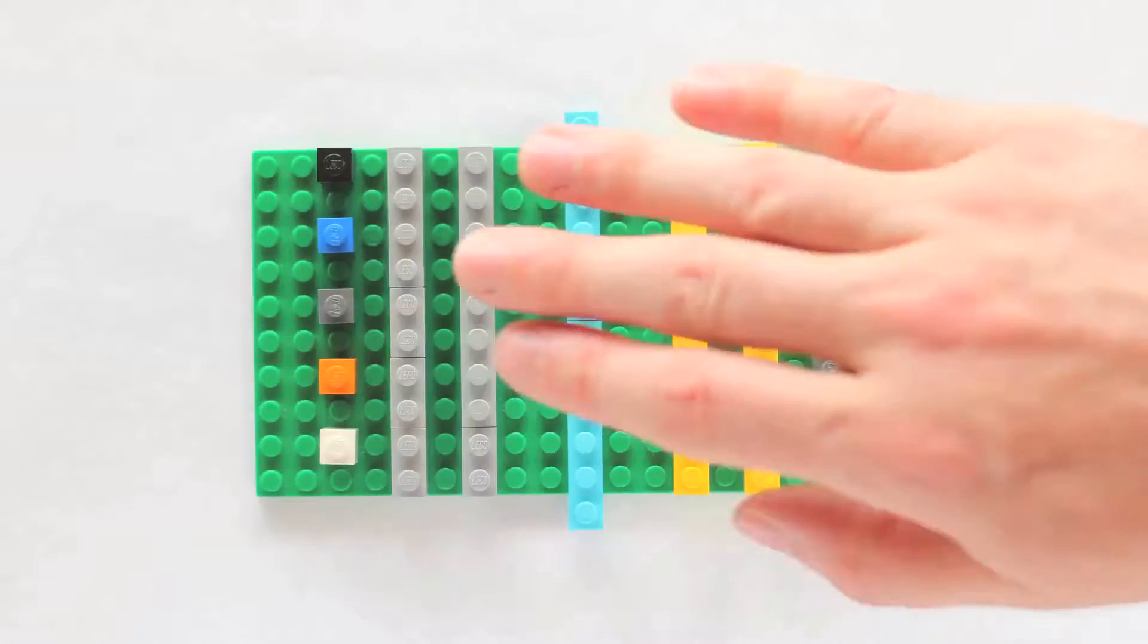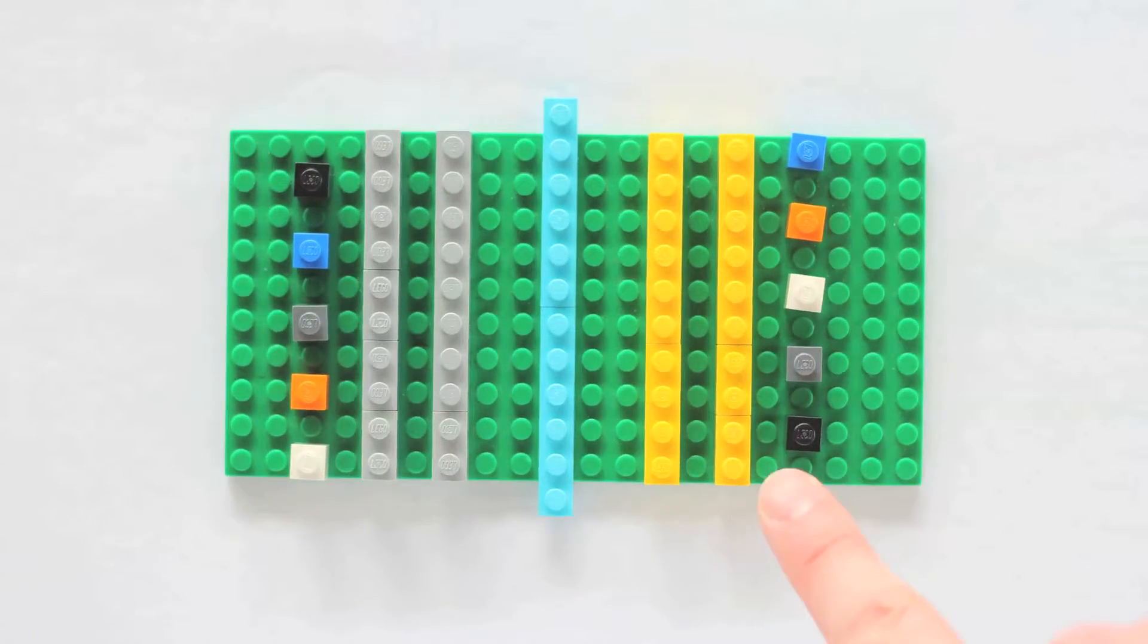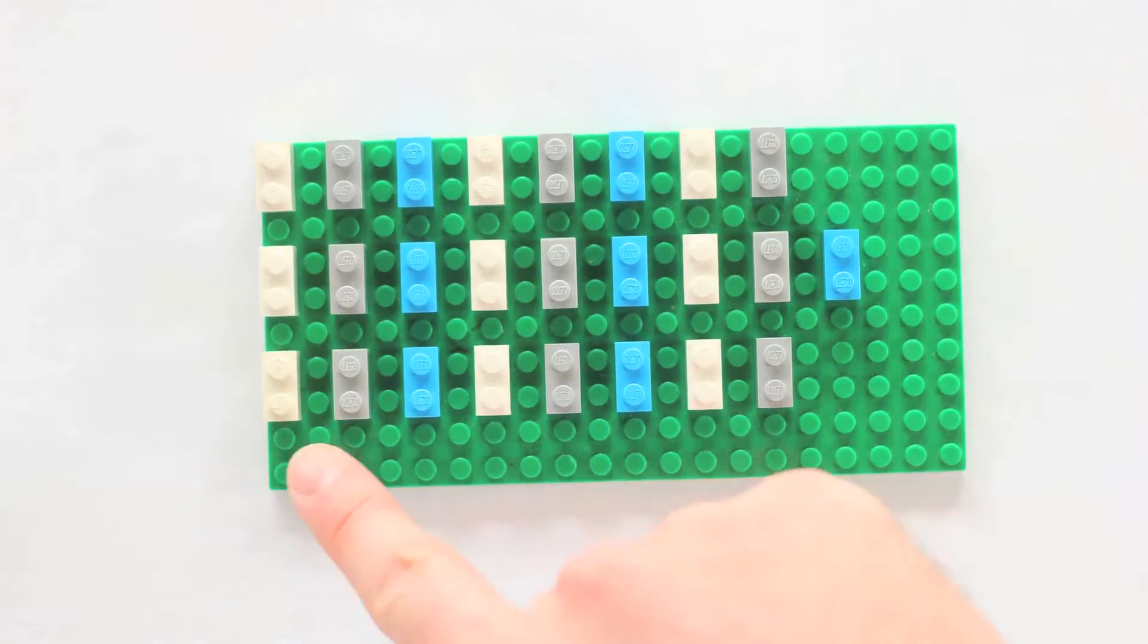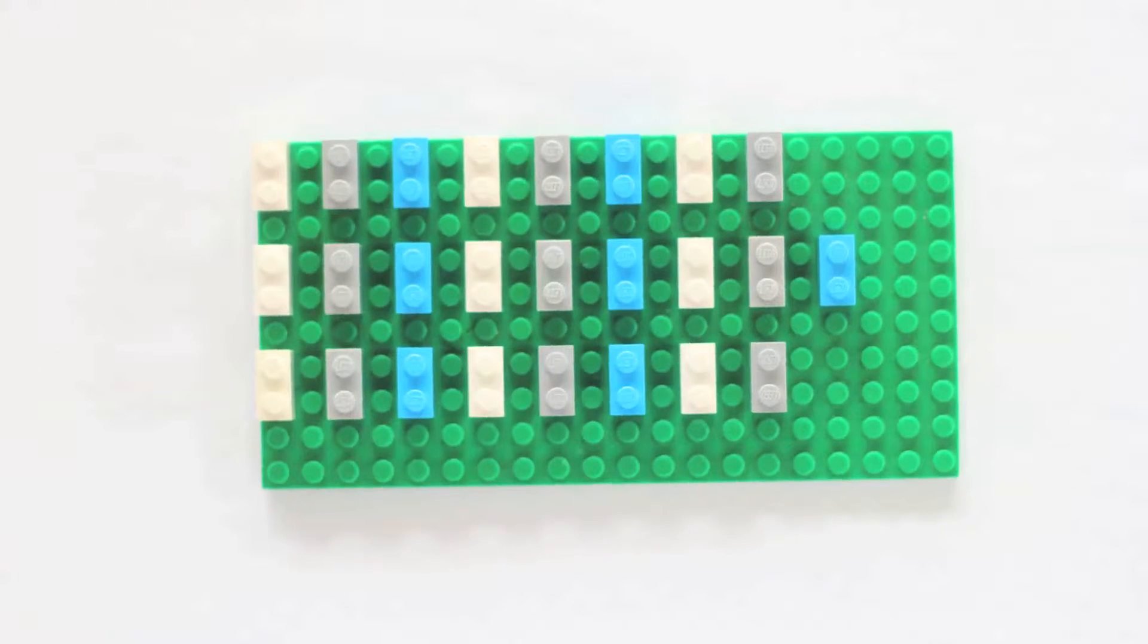In the 2 x 25 model, the tens and ones are bundled together into two tens and five ones. In the 25 x 2 model, there are 25 separate sets of twos.